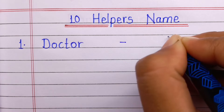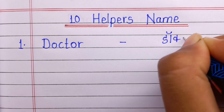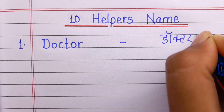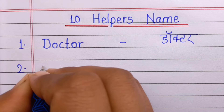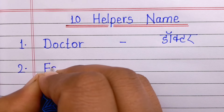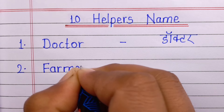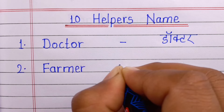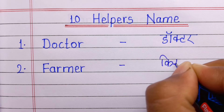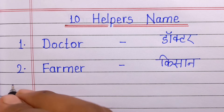Number 1: Doctor. Doctor means doctor. Number 2: Farmer. Farmer means kisaan.